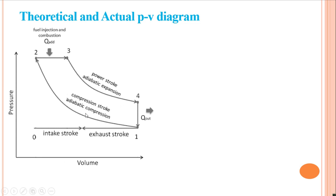The combustion process (two to three) is a constant pressure process that takes place during a small part of the expansion stroke. At the end of the expansion stroke, the pressure suddenly drops (four to one in the PV diagram) to atmospheric pressure.